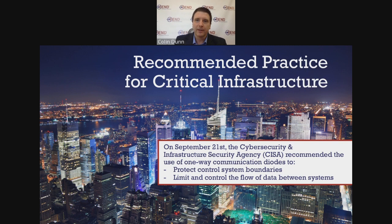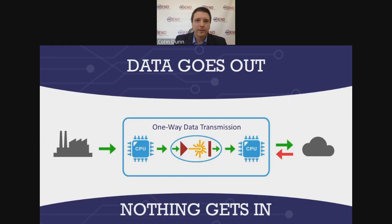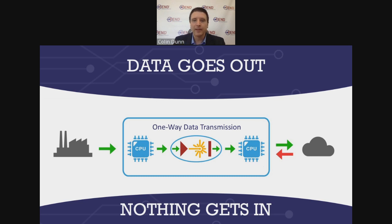These are all different terms for similar products. They can be used to protect control system boundaries and to limit and control the flow of data coming into or out of these really critical networks. They do that by turning data into light and then getting that data off to where it needs to go. It's a transformation from a typical TCP connection into a one-way stream of data — into a beam of light. They're turning data into light and then back again, getting it off to where it needs to go — often the cloud, another part of a campus, or another part of utility territory.